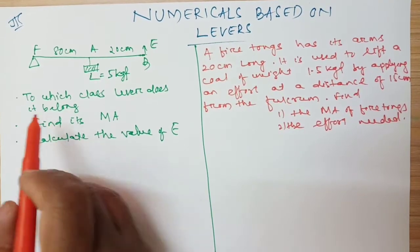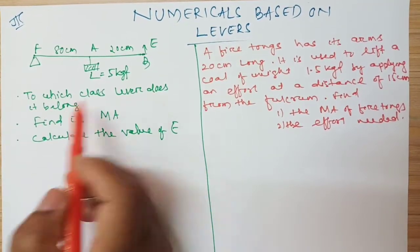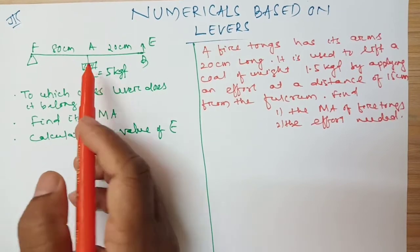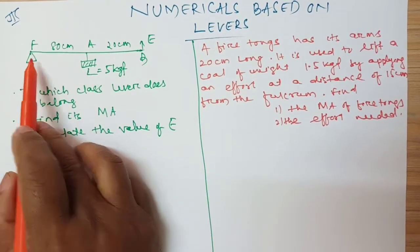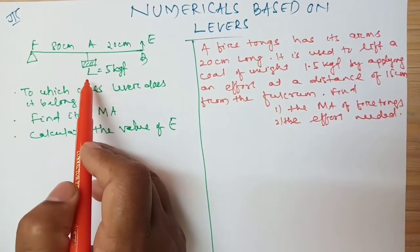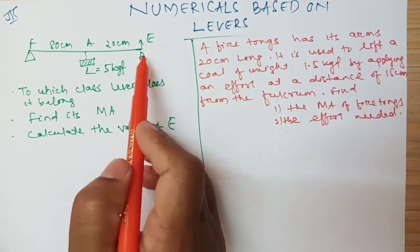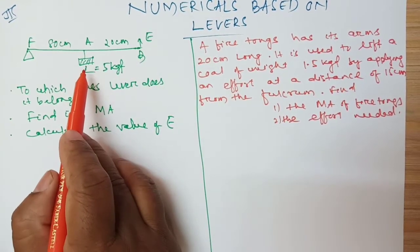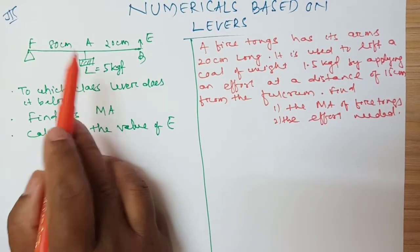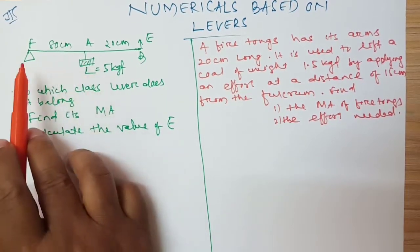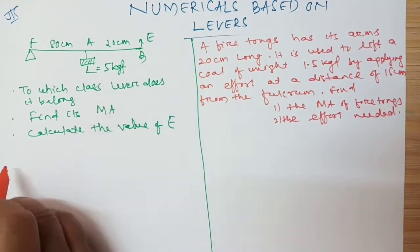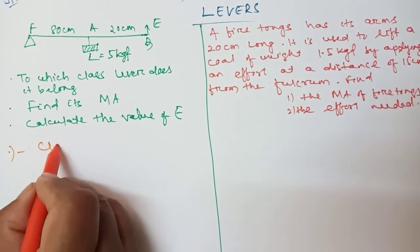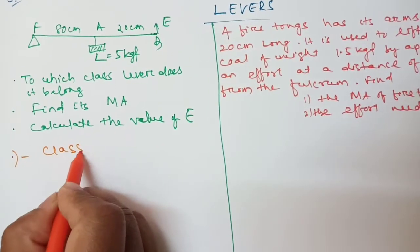First question: to which class does this lever belong? See the diagram — fulcrum is here, load is in the middle, and effort is here. As I told you, if the load is present between the fulcrum and effort, this is a class 2 lever. So the first answer is: class 2 lever.